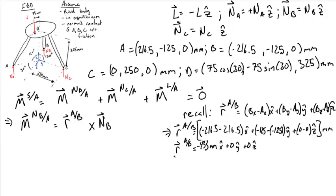This gives us that R_A to B is minus 433 millimeters in the x-hat direction, plus 0 in the y, and 0 in the z.